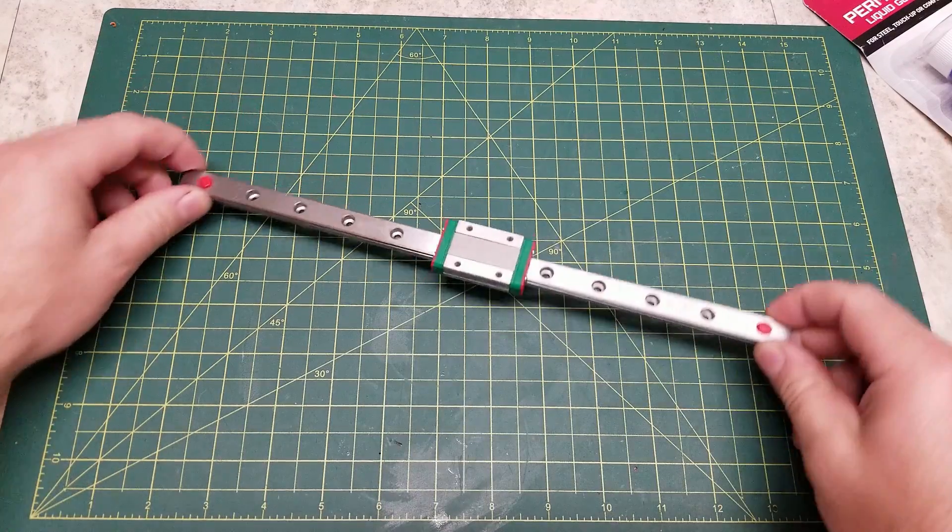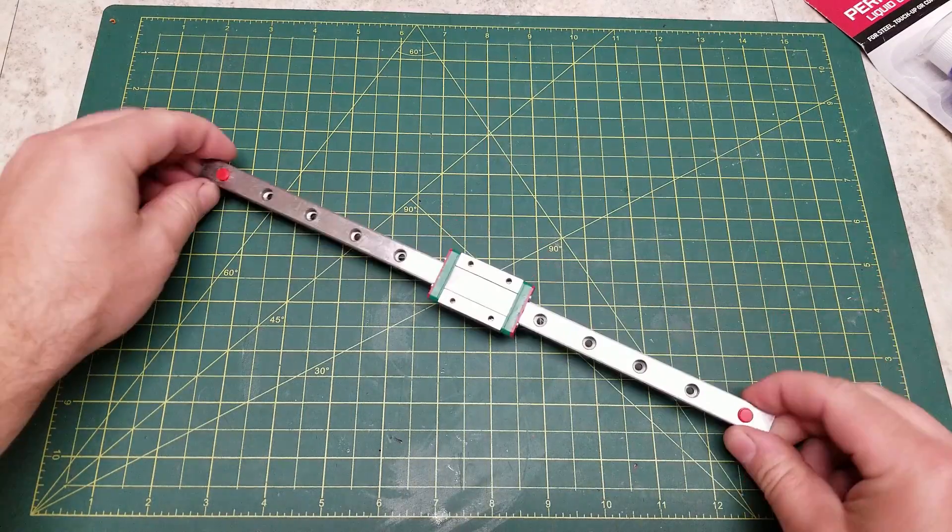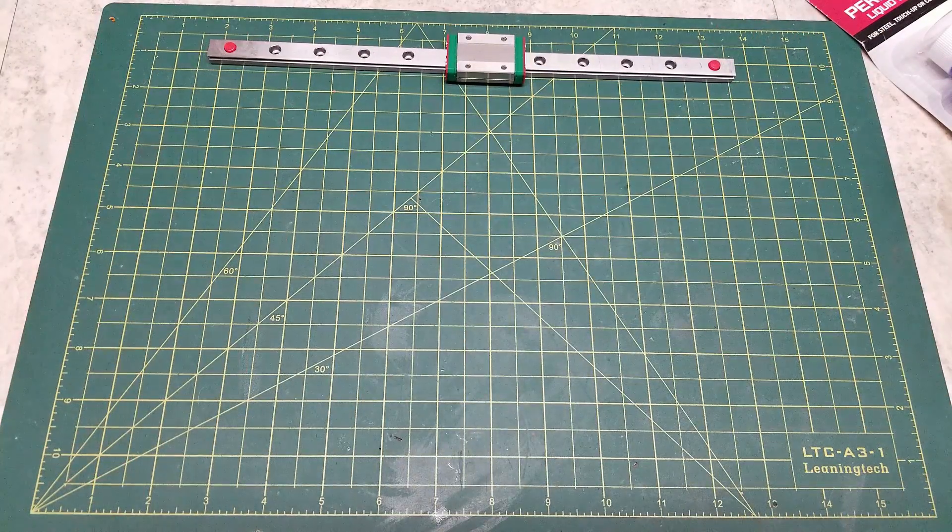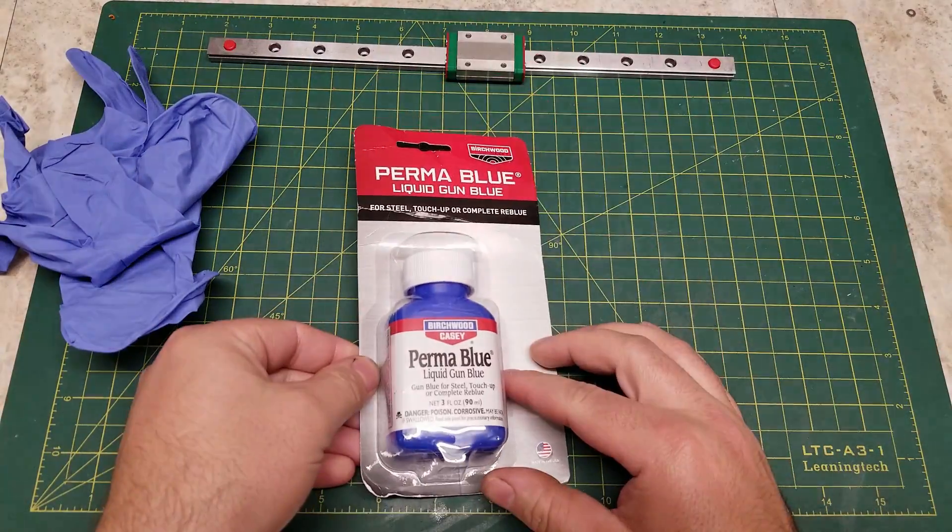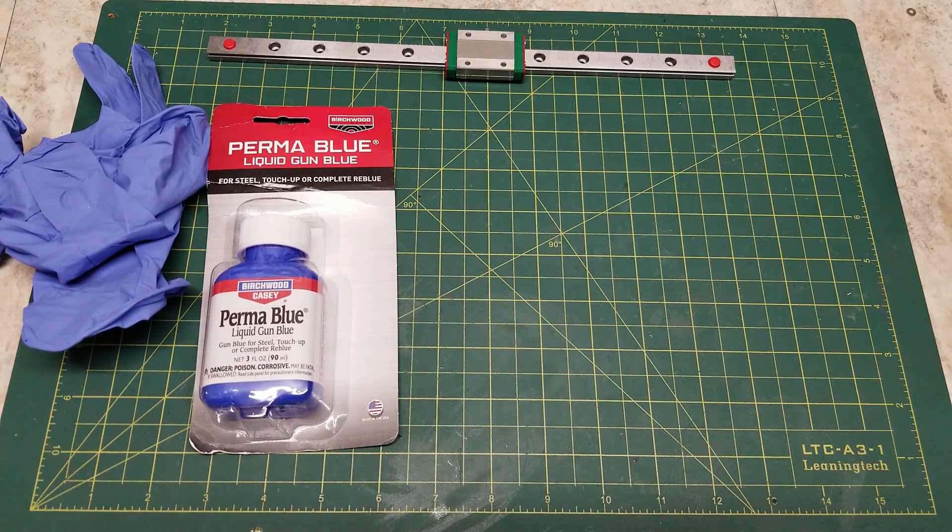So the rail we will be bluing today is an MGN 12 linear rail. This is from CNA off AliExpress. Along with the rail we will need some rubber gloves to prevent oils from our hands from getting on the rail and to protect them from the chemicals. Some gun blue, this can be found from various vendors, pretty much any type will work.